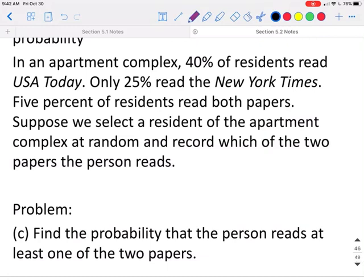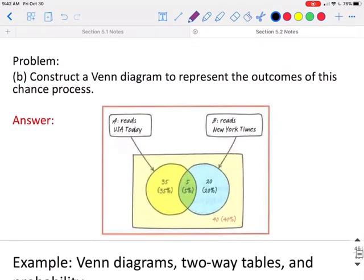Find the probability that a person reads at least one of the two newspapers. Now this means they could read just one or both of them. So one way to do this is just to look at your Venn diagram, and we can add all the categories together where they at least read one of the papers. So we can do 35 plus 5 plus 20, which would give us 60% of the population.